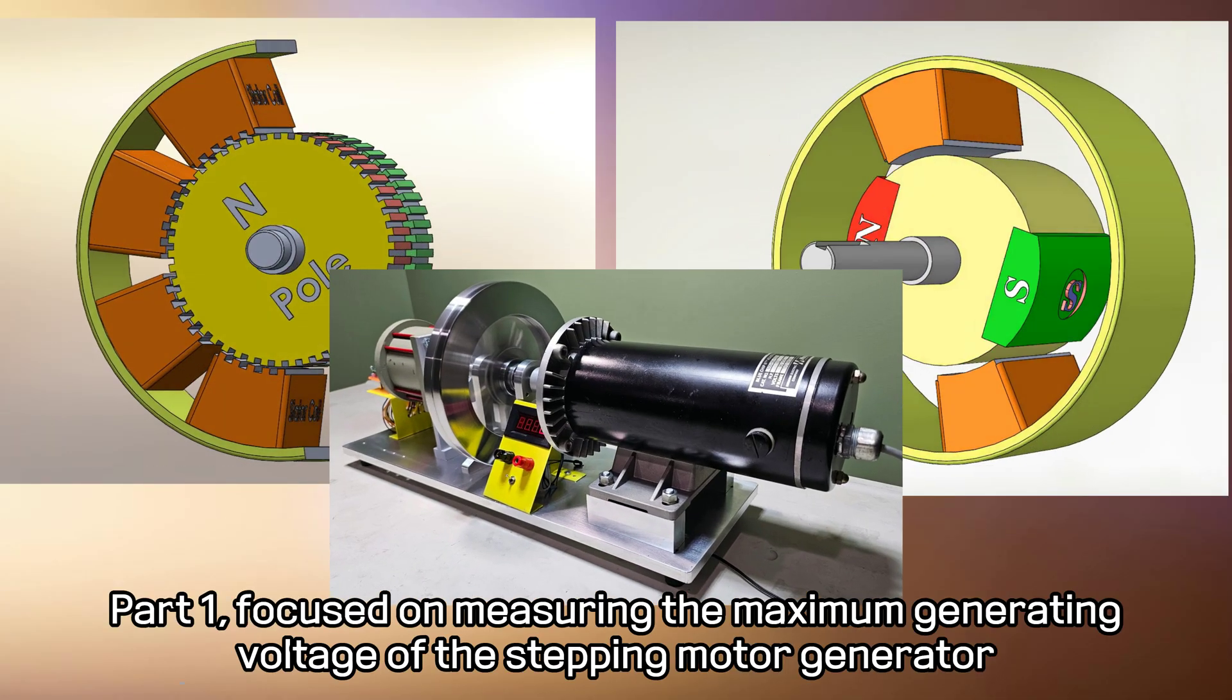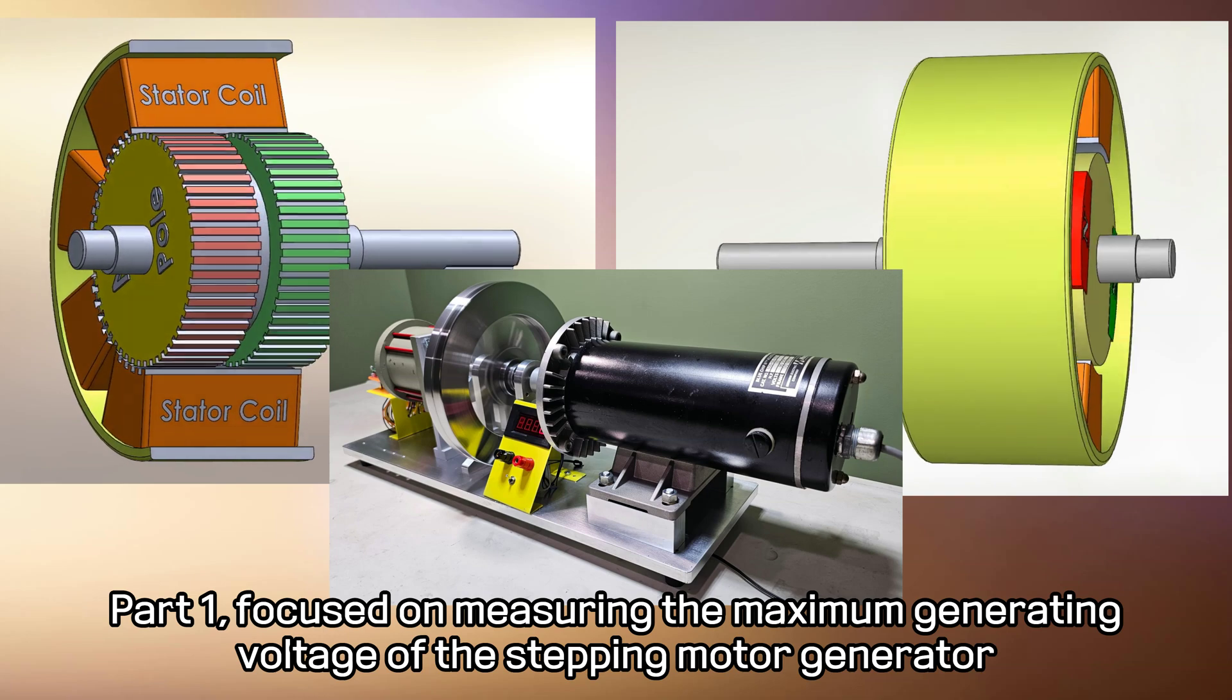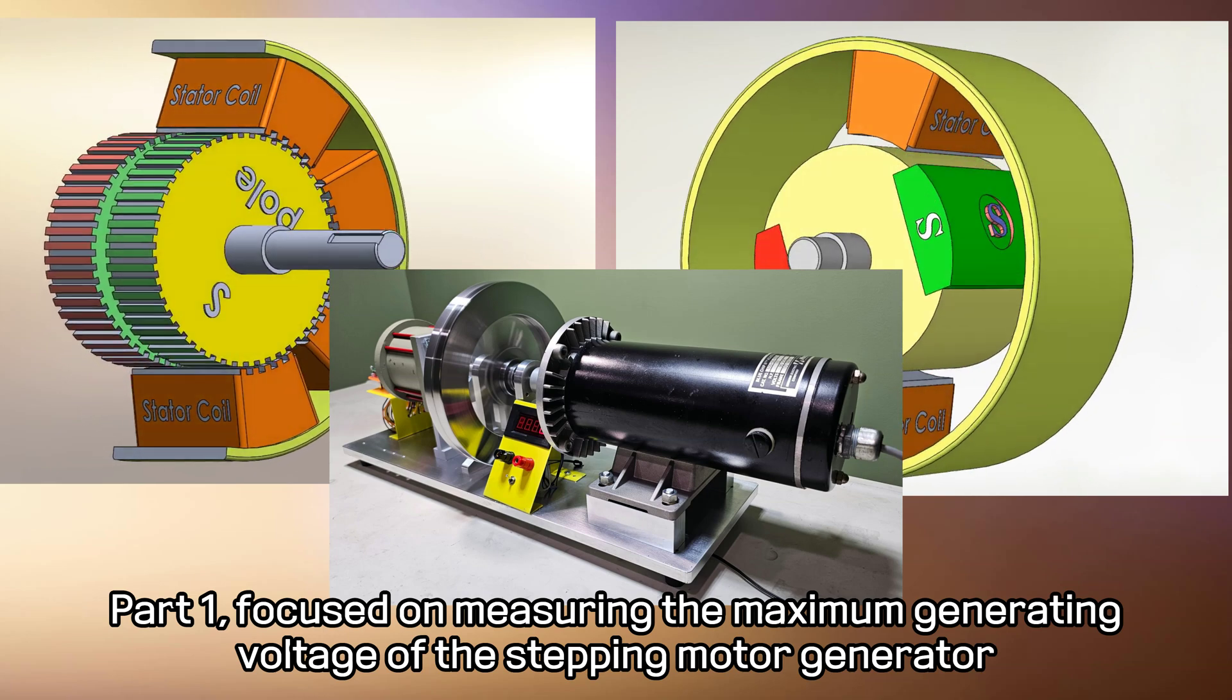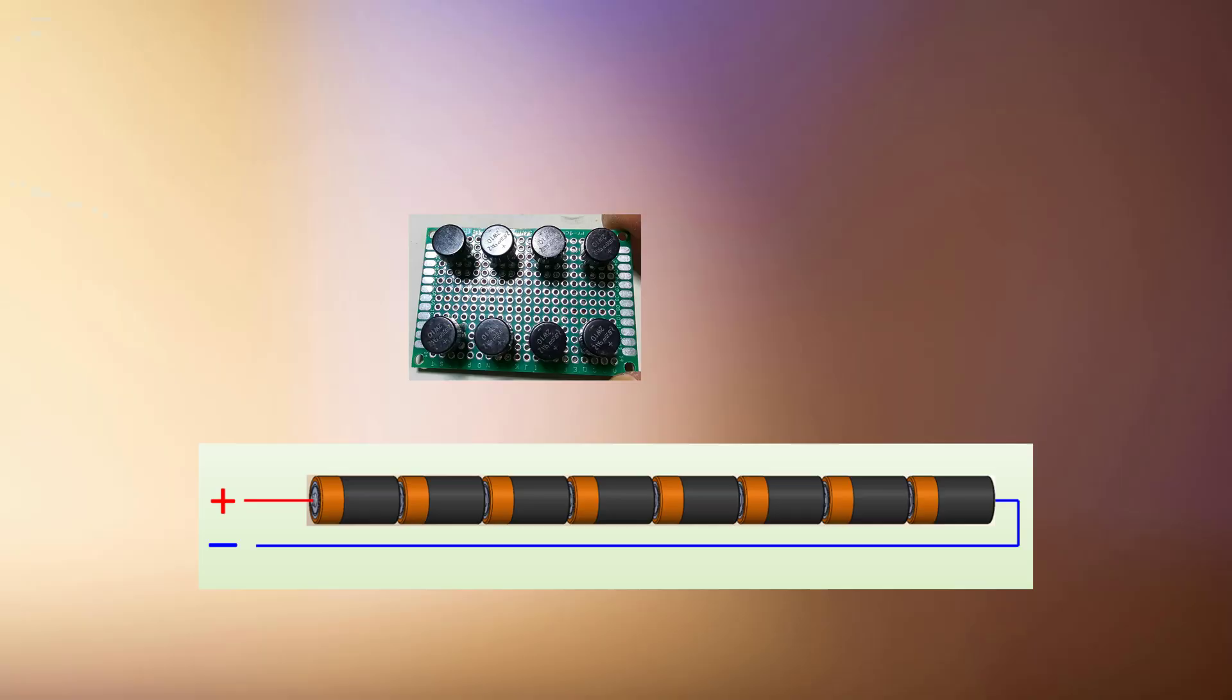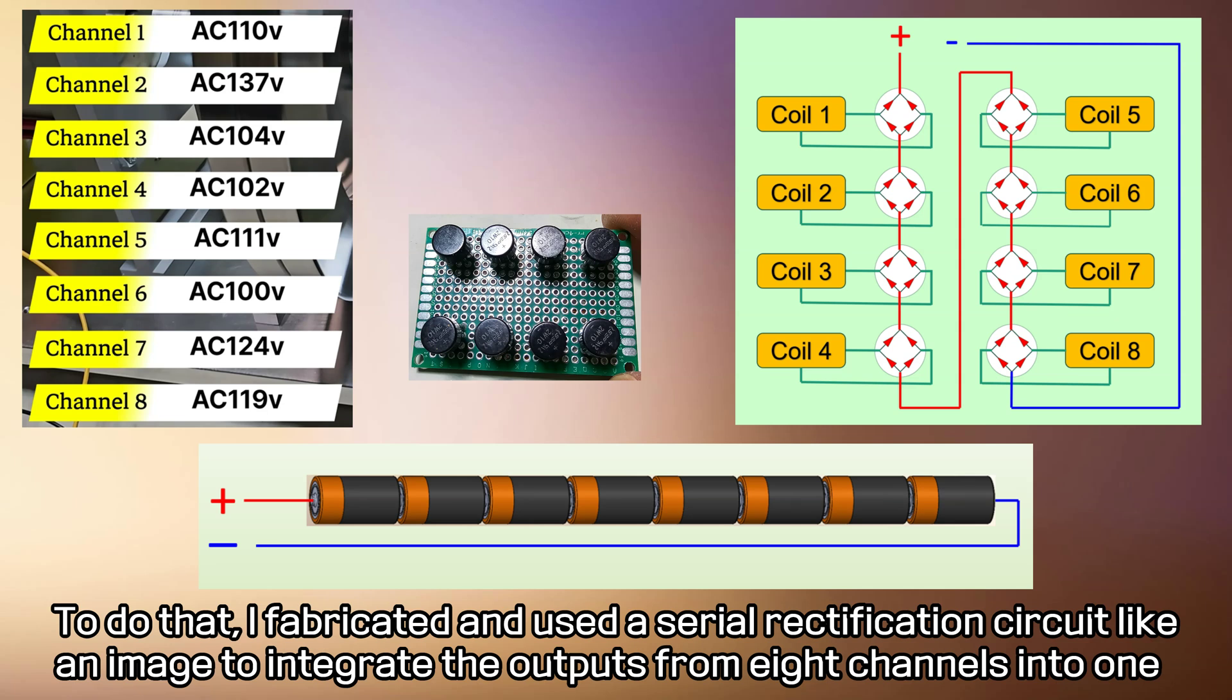Part 1 focused on measuring the maximum generating voltage of the Stepping Motor Generator. To do that, I fabricated and used a serial rectification circuit like an image to integrate the outputs from eight channels into one.